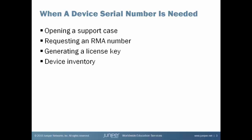Certain features on Juniper Networks products are enabled through licensing, and the licenses that you will install to enable the feature are tied to the serial number of the platform that you would like to enable the feature on.